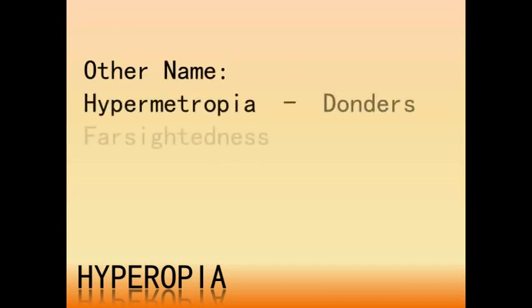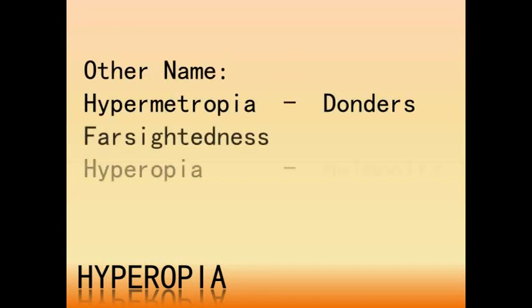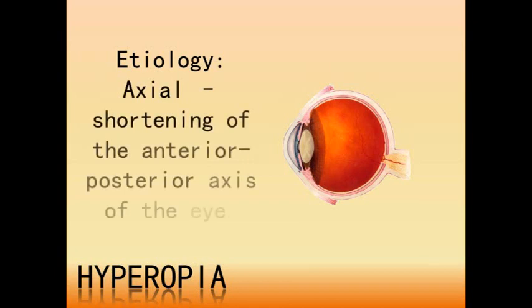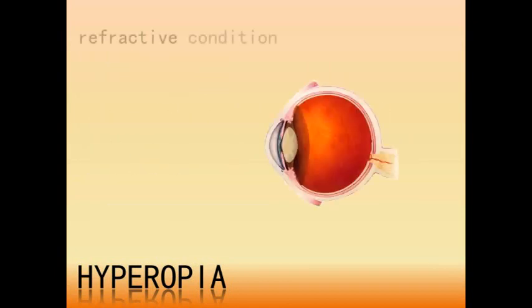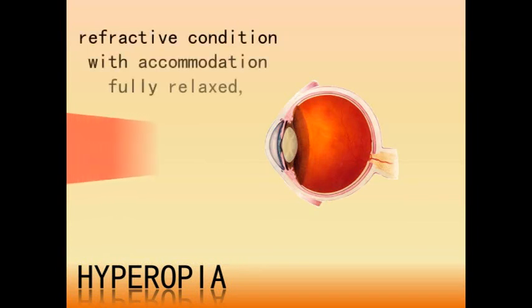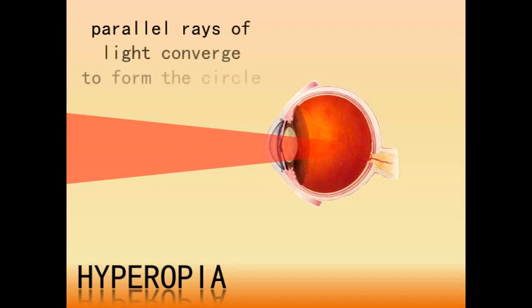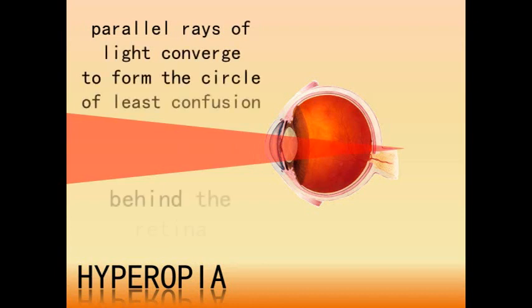Hyperopia — also called hypermetropia (named by Donders) or farsightedness (named by Helmholtz) — is due to the shortening of the anterior-posterior axis of the eye. It is a refractive condition in which, with accommodation fully relaxed, parallel rays of light converge to form the circle of least confusion behind the retina.